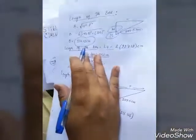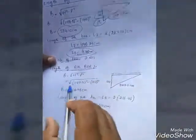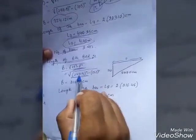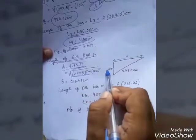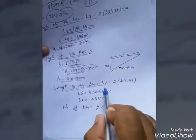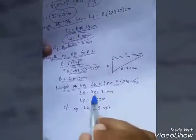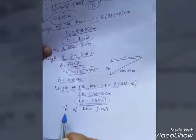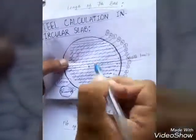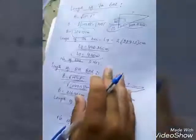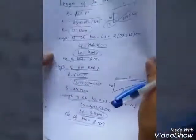For the eighth bar, base equals root of 247.5 squared minus 120 squared. Base equals 216.46 centimeters. Length of eighth bar is 2 times 216.46 equals 432.92 centimeters, so L8 is 4.33 meters. Number of bars is two. This is the method to find the length of every bar in a circular slab.